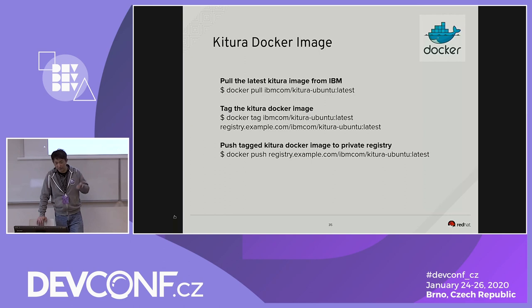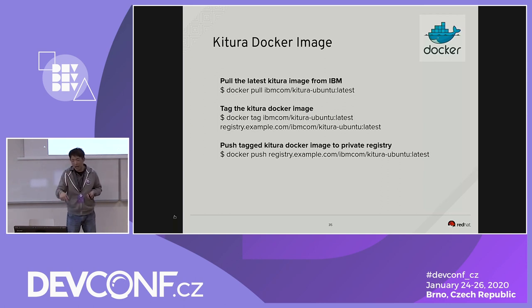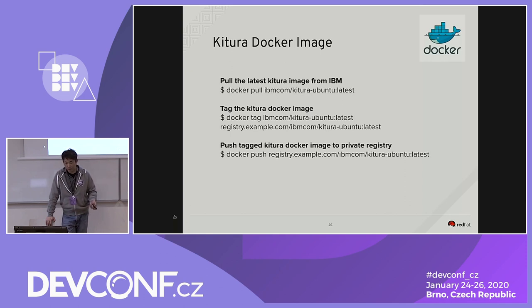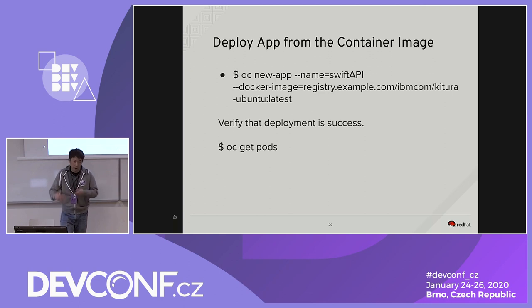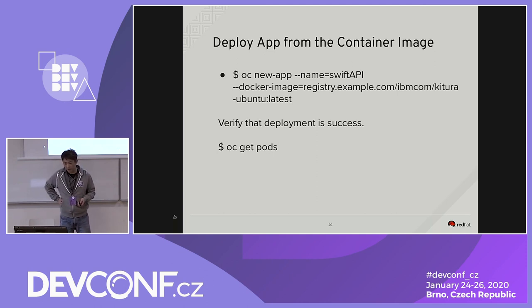Going back to Kitura: where do we get the Docker image? You can get it from ibm.com/kitura with the latest version. Once you get the image, you can tag it and push the Kitura image into your Docker registry in OpenShift. The command to start is: after you have the Kitura Docker image, you run OC new-app, specify an app name, specify the Docker image pointing to the registry you just pushed to. After that, deployment happens automatically and you can run OC get pod to see the list of pods.